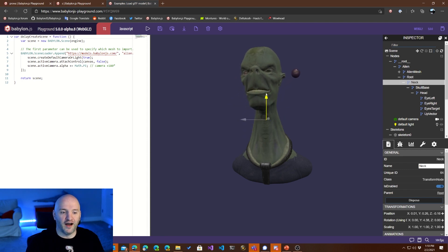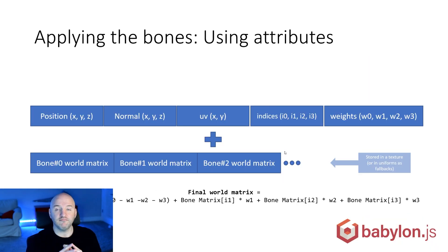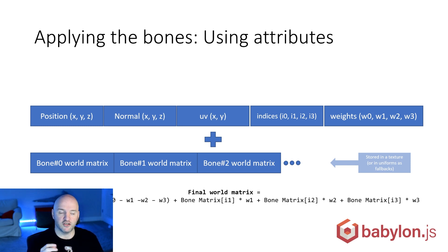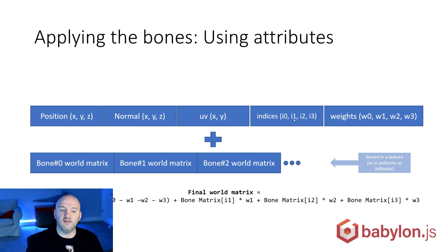Let's go back to the presentation. To apply a skeleton, we first need the mesh. Remember, the attributes of a mesh are all the properties on a vertex — for instance, a default vertex has a position, a normal, and a UV. In the case of bones applied to it, we also need two additional pieces of information. Every single vertex can have up to four matrices — four bones — that will control its destiny. These are stored as indices I0, I1, I2, and I3, as part of the mesh attributes.